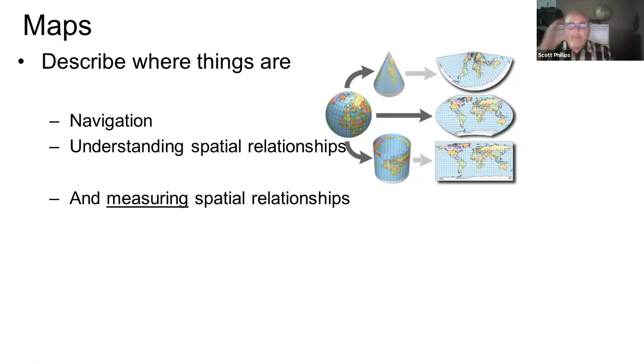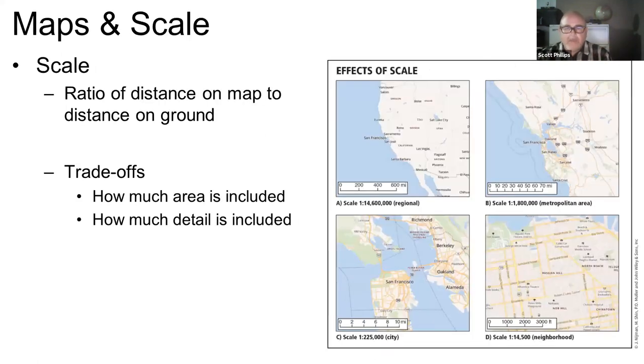Now one of the key concepts when it comes to maps is the concept of scale. Scale has to do with the ratio of distance on the map to distance on the ground. One way to think about this is Google Maps. If you zoom in or zoom out on Google Maps, what you're doing in effect is you're changing the scale. When you're zoomed in, the ratio of distance on the ground to distance on the map is different than when you're zoomed out.